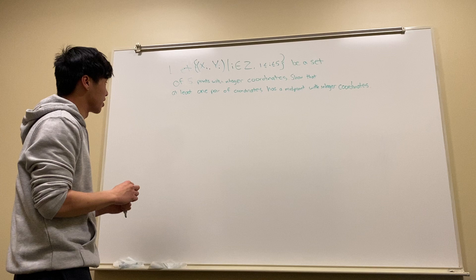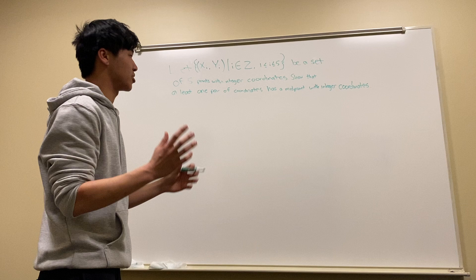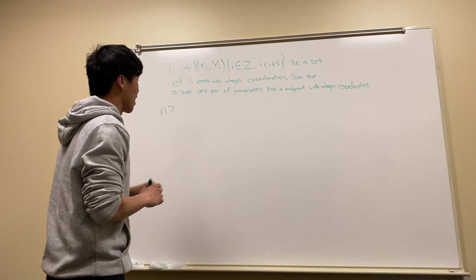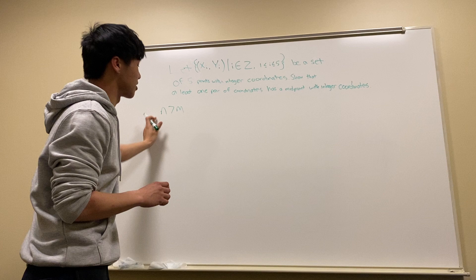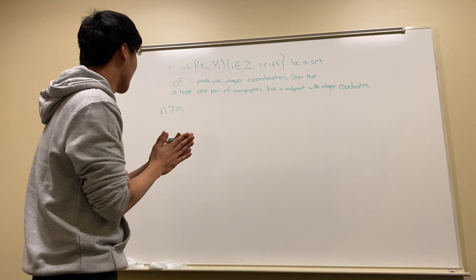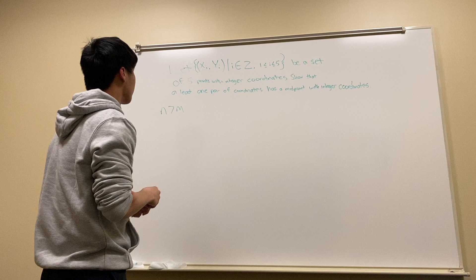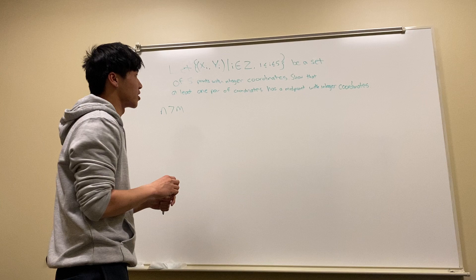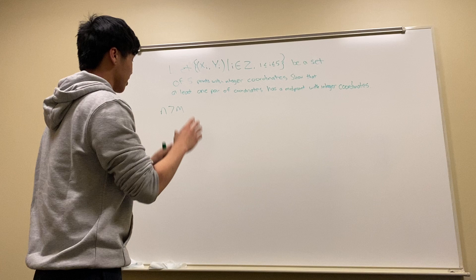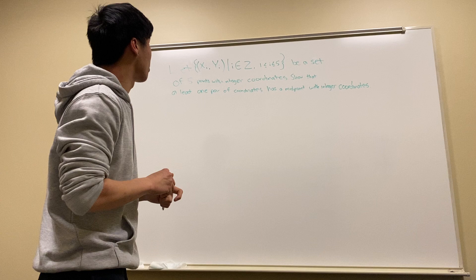We should start by defining what the pigeonhole principle even is. Basically, with n elements in a set and m categories, as long as the number of elements is greater than the number of categories, there has to be a category that has at least 2 elements. So we're trying to show that m is equal to 4 or anything less than that — we have pigeons and holes, and because pigeons are greater than holes, there exists a hole with at least 2 pigeons.